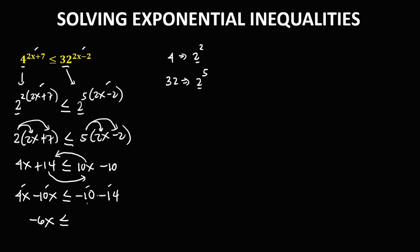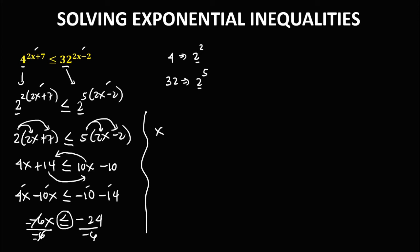Since both constants are negative, add them: negative 10 plus negative 14 is negative 24. So we have negative 6x less than or equal to negative 24. Divide both sides by negative 6. When dividing both sides by a negative number, the inequality flips, so less than or equal to becomes greater than or equal to.